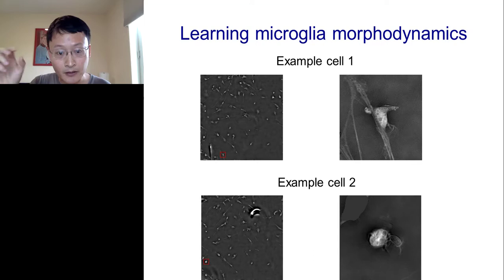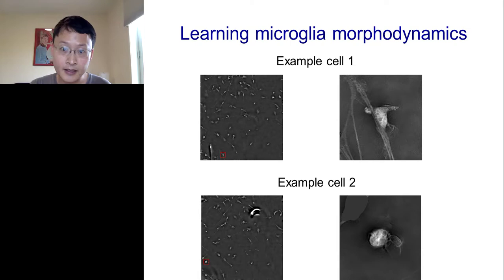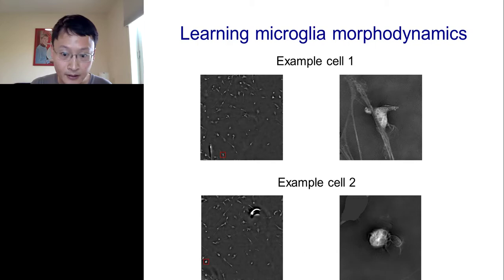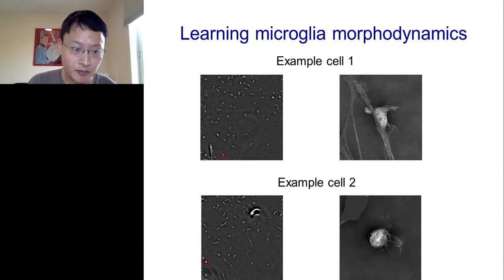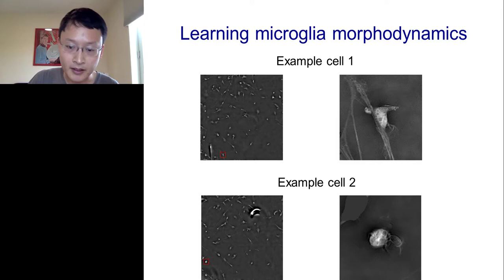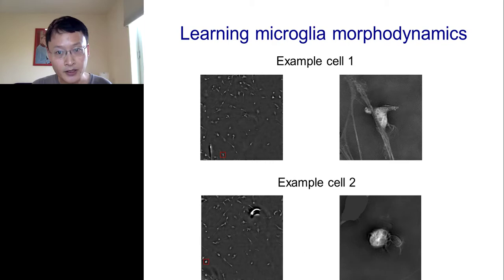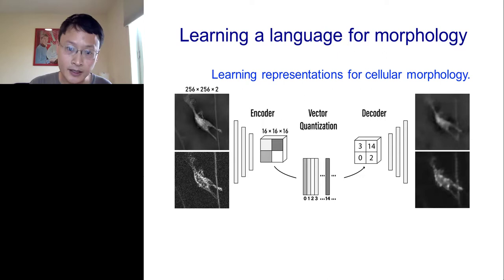For example, if I'm interested in a particular cell here at the bottom in the red square, the algorithm allows us to zoom into that cell, and you can see it's having quite interesting interactions, perhaps even interacting with some neurons. Zooming into a neighboring cell, that neighbor is actually having quite different behaviors — it seems to be very active, spinning around, and you can even make out some of the sub-cellular organelles within this microglia. These examples also highlight one of the challenges, because these cells are behaving in quite complex and quite rich dynamics. We don't really have a very precise vocabulary to describe these dynamics and make them quantitative.